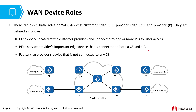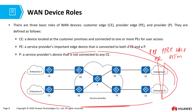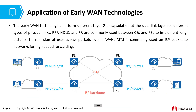We've talked about several protocols: point-to-point protocol, PPPoE, HDLC, frame relay, and asynchronous transfer mode. Where exactly do all these protocols take their role in this structure? When you look at the early wide area network protocols, PPP, HDLC, and frame relay are applicable between the Customer Edge device and the Provider Edge device — they work on the access links between CE and PE.